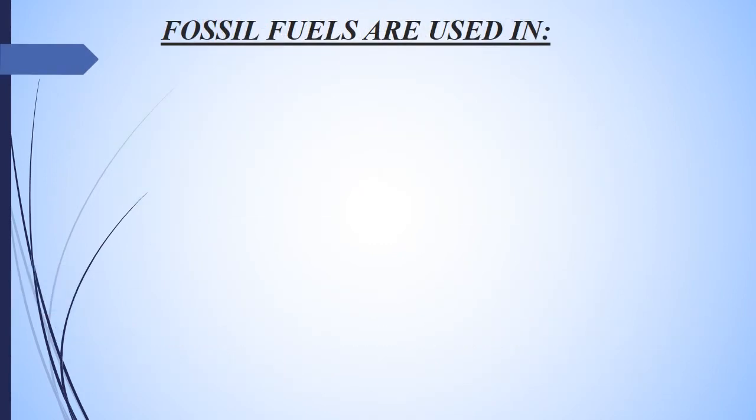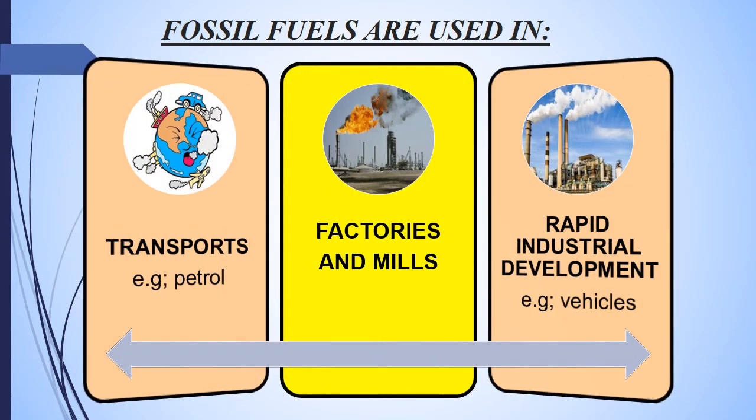Fossil fuels are used in three main ways: as petrol in transport, in factories and mills, and as fuel in vehicles, due to rapid industrial development.